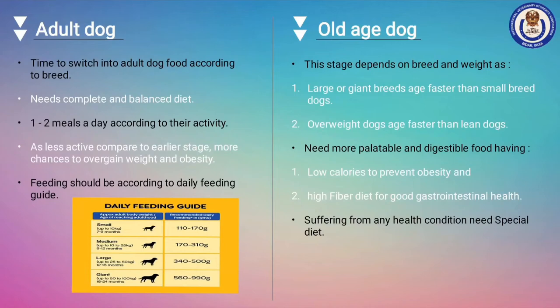Old age stage: This stage also varies with breed and the weight a dog gained in its previous stage. As their teeth start dropping and the digestive system becomes sensitive, they need highly palatable and digestible food with low calorie and high fiber diet. They need special attention and your valuable time. Consult your vet for their feeding diet and schedule.